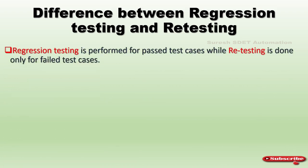Regression testing is performed for past test cases, while retesting is performed only for failed test cases. For example, if you design test cases based on login and certain functionality then logout, you design test cases for each module and put them into a suite — that suite is called regression testing. If any test case fails and you perform testing again on that, it is considered retesting.